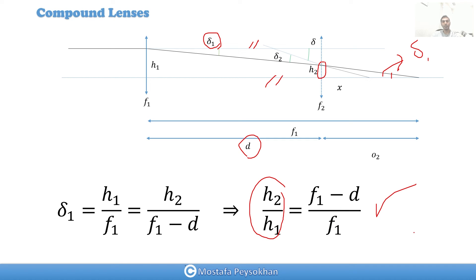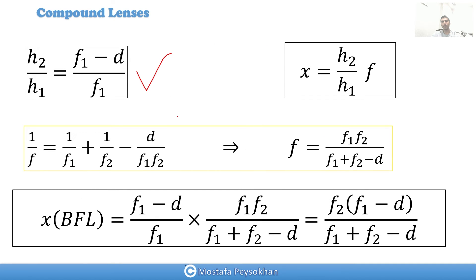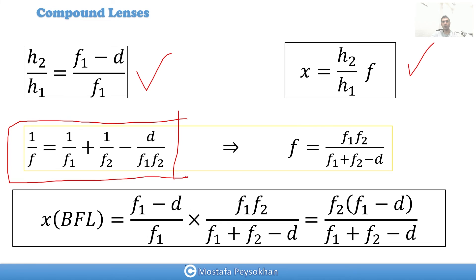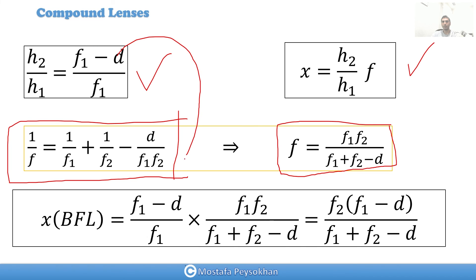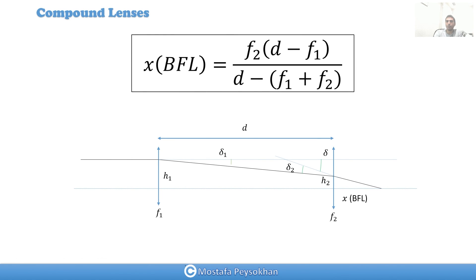We now have h2 over h1 equal to (f1 minus d) over f1, and x equals (h2 over h1) times f. From another video I proved that one over f equals one over f1 plus one over f2 minus d, so f equals f1 times f2 over (f1 plus f2 minus d). Substituting, the f1 terms cancel and we get x equals f2 times (f1 minus d) over (f1 plus f2 minus d). That is the final equation for the back focal length.